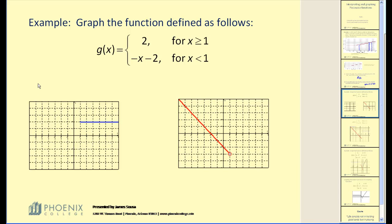G of x equals 2, and that's the horizontal line y equals 2, but only for x greater than or equal to 1. So x is greater than or equal to 1, starting at 1 and moving to the right. Now the second piece of this function is the line g of x equals negative x minus 2, only for x less than 1. This line has a y-intercept of negative 2, slope of negative 1. It would be this red line, but notice how we stopped it when x was equal to 1, and since it did not include 1, we made an open circle to show that.